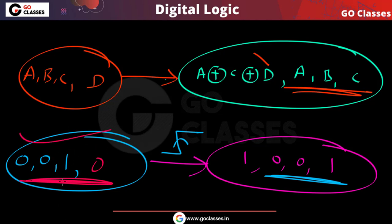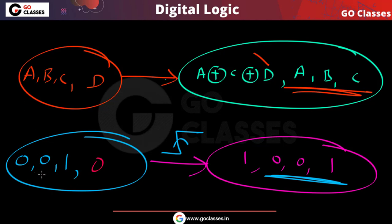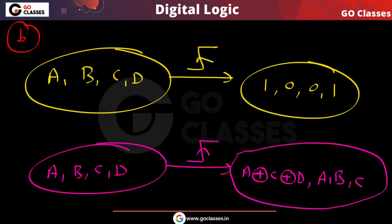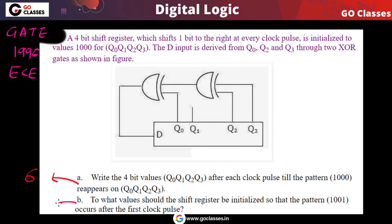So the answer for part B is 0, 0, 1, 0. If the initial register content is 0010, then after one rising edge of the clock you will get 1, 0, 0, 1. The answer is 0010.